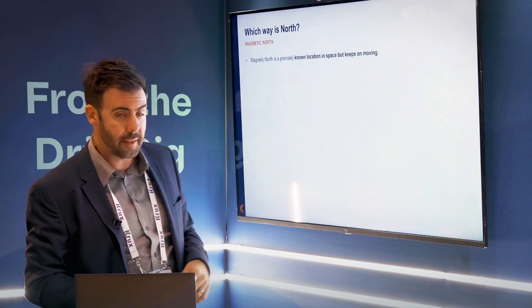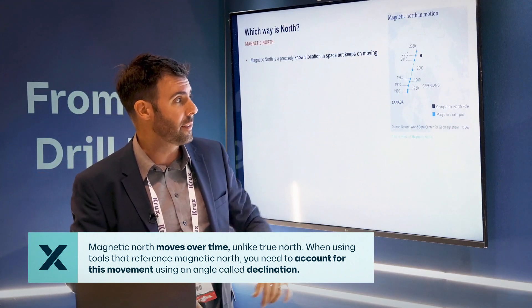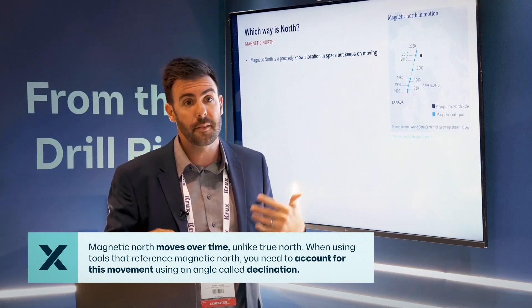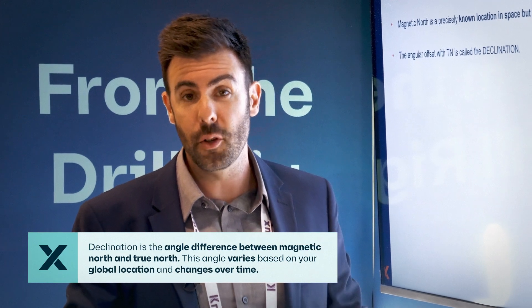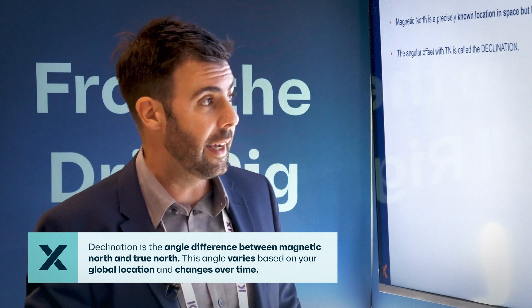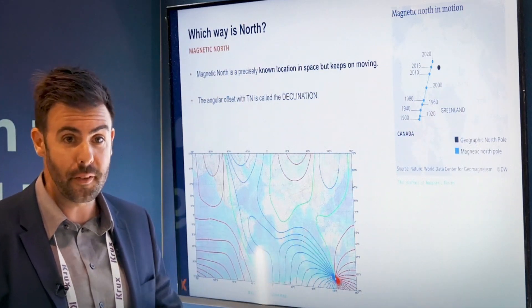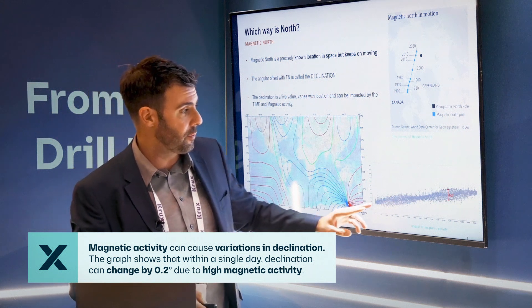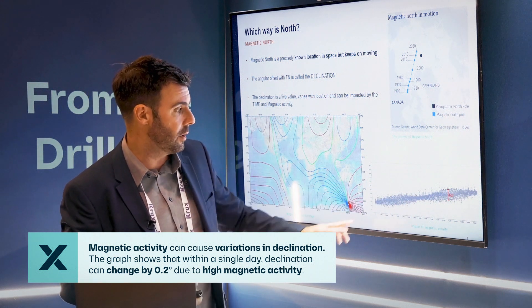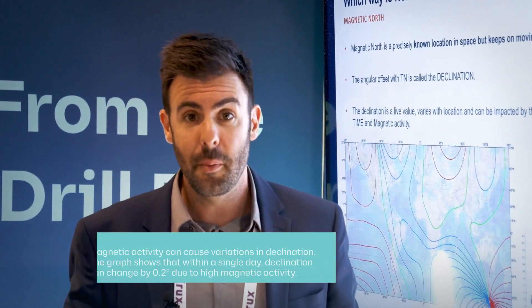If we look at magnetic north first — it is a known location, but its location moves with time. We can see the location of magnetic north in 1900 versus where it is today — it has moved quite significantly. That's something you need to consider when using a magnetic tool that references magnetic north. To make those conversions we use an angle called the declination, which is basically the difference between magnetic north and true north. That declination will vary depending on where you are in the world, and it will also vary with time — the declination will be different three years ago versus today. There can also be variation due to magnetic activity; in one single day you could have a variation of 0.2 degrees due to high magnetic activity in an area.